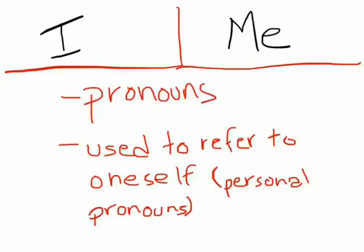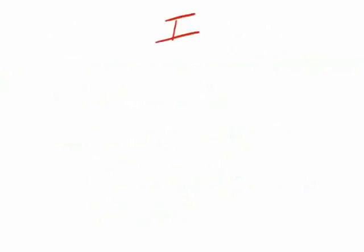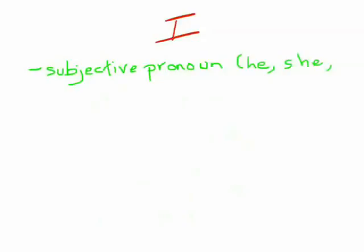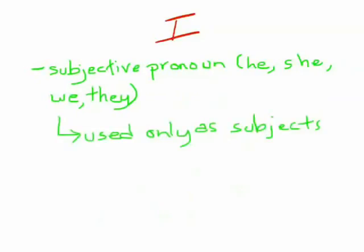It is easy to get confused about this, but the difference is in reality quite simple. Let's see if we can work it out. 'I' is a subjective pronoun like he, she, we, and they. These pronouns are used only as subjects in a sentence. In other words, they are used in place of the noun that is performing the action being described.